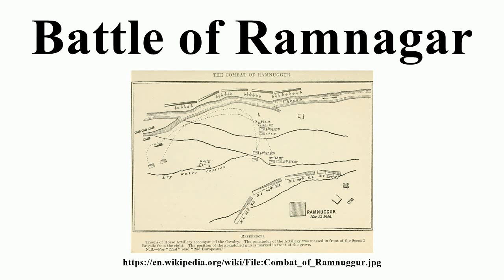The Second War broke out in April 1848, when a popular uprising in the city of Multan forced its ruler, Diwan Mulraj, into rebellion. The British Governor-General of Bengal, Lord Dalhousie, initially ordered only a small contingent of the Bengal Army under General Whish to suppress the outbreak. He also ordered several detachments of the Khalsa to reinforce Whish.